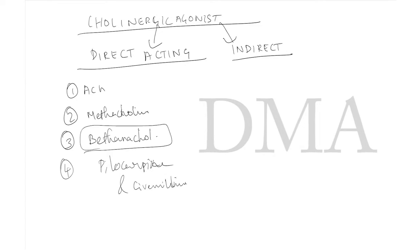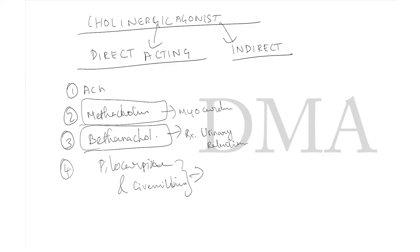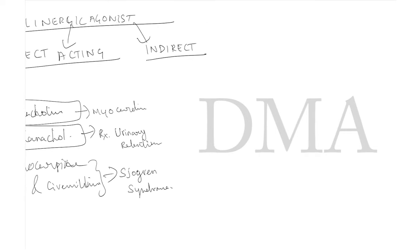Bethanechol (B for bladder) is used for urinary retention. Methacholine acts on the myocardium. Pilocarpine and cevimeline are used for dry mouth in Sjögren's syndrome — a very important MCQ.